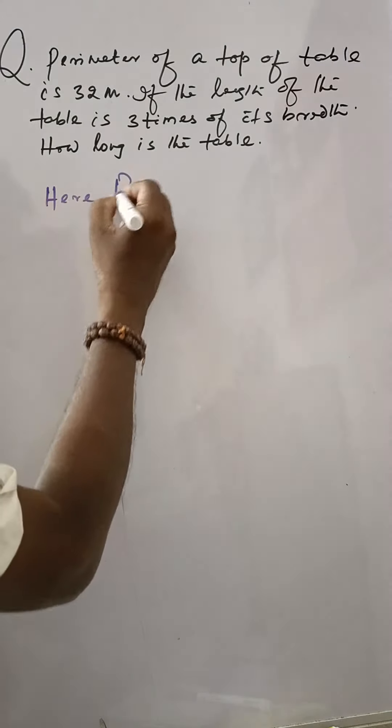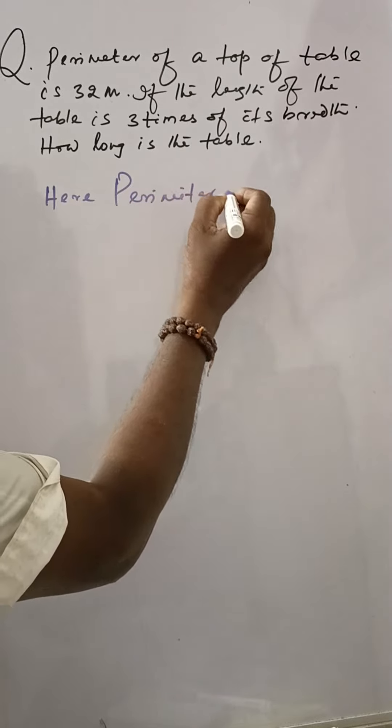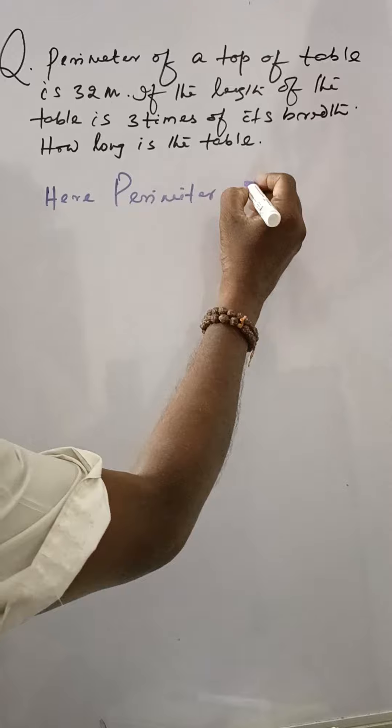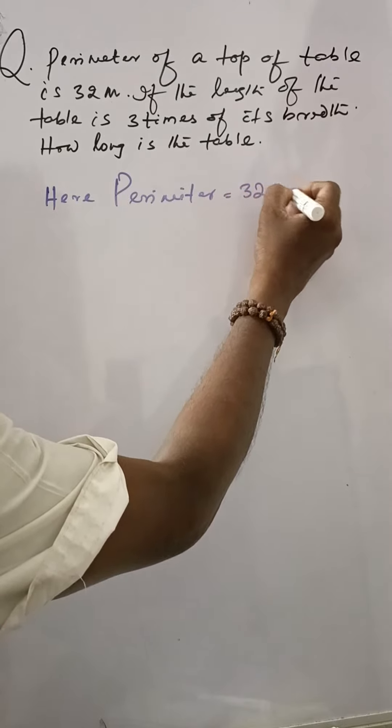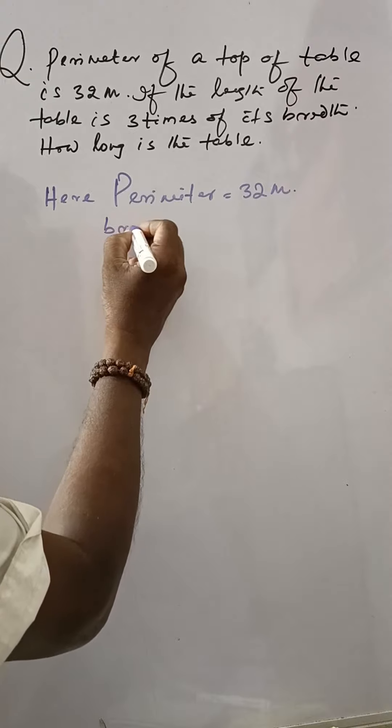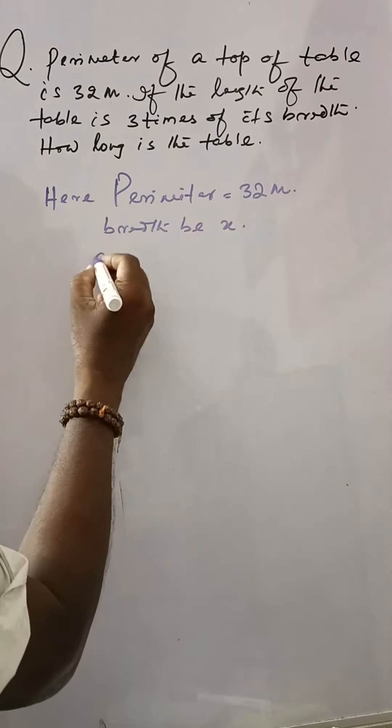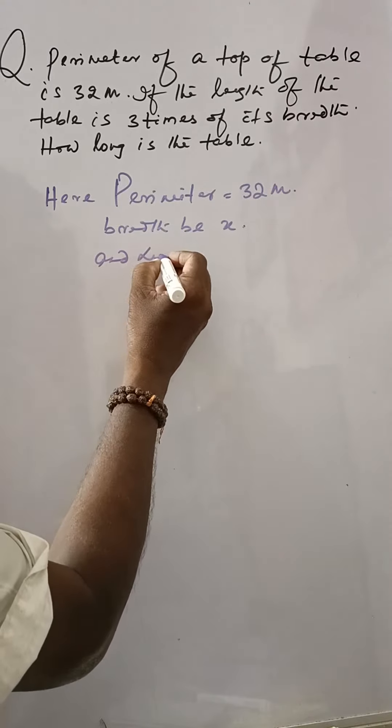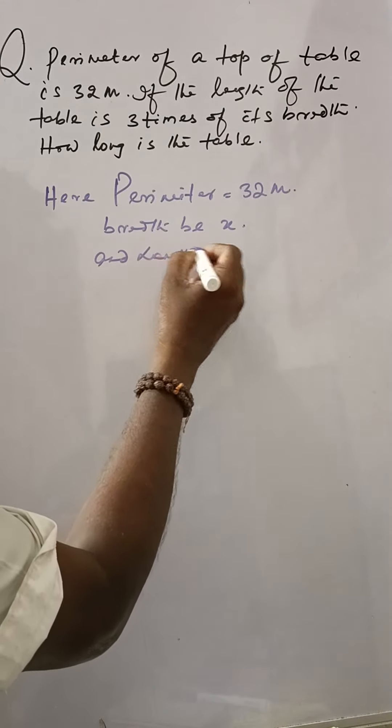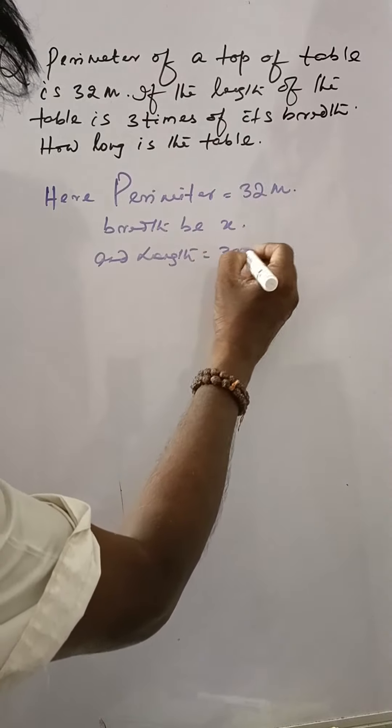Here, perimeter equals 32 meters. Let breadth be x, and length is three times the breadth, that means 3x.